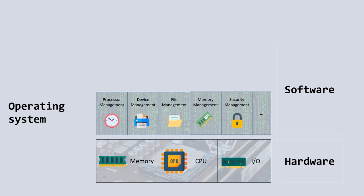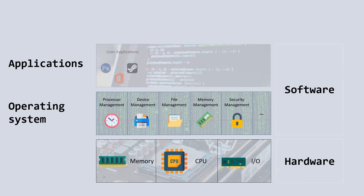The operating system is a program that acts as an interface between the user and the computer hardware. It consists of several subsystems, each with its specific responsibility. A few of them are: processor management, which decides which process gets the CPU, when, and for how much time; device management, which tracks all devices and decides which process gets the device and for how much time; file management, which tracks information, location of files, and uses; memory management, which tracks primary memory — including what parts are used by which process and which parts are free, and allocating and deallocating memory; and security management, which prevents unauthorized access to programs and data.